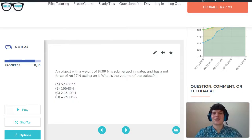Taking a second look at our answer choices, we realize that answer choice D, 4.75 times 10 to the negative third, is closest to our approximation of 5 times 10 to the negative third.